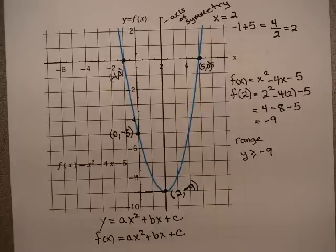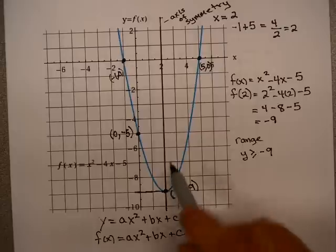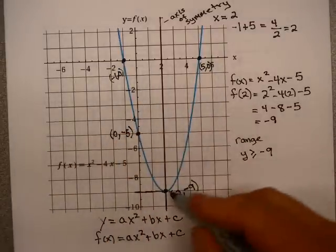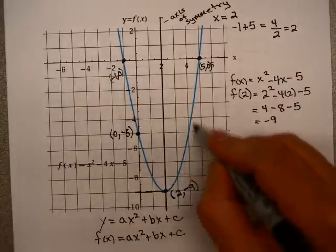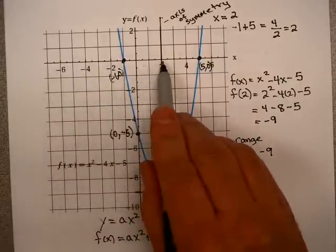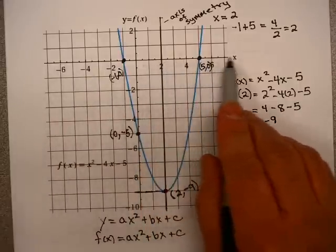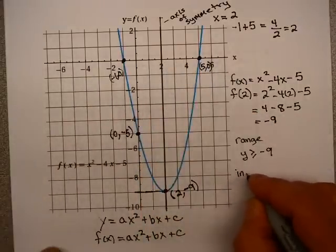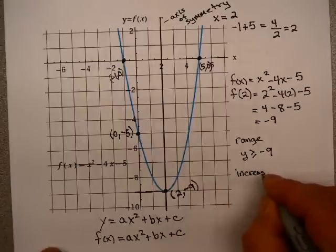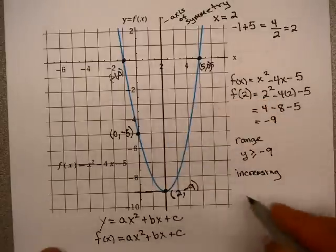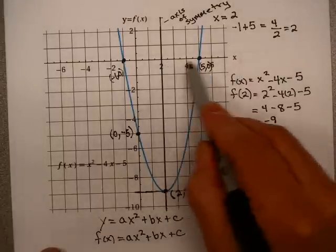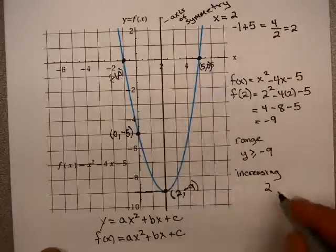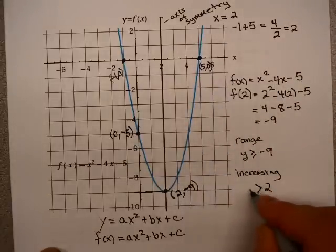Now, one other question that I will ask you is where is it increasing and where is it decreasing? Increasing means as you move from left to right, the graph is rising. It's pretty clear that from this point on, the graph is rising. And when they ask you where is it increasing, they're looking for the values of x. So I could say it's increasing from this value, x equals 2, and you're larger than 2. When x is larger than 2, the graph is increasing. So we say x is larger than 2.